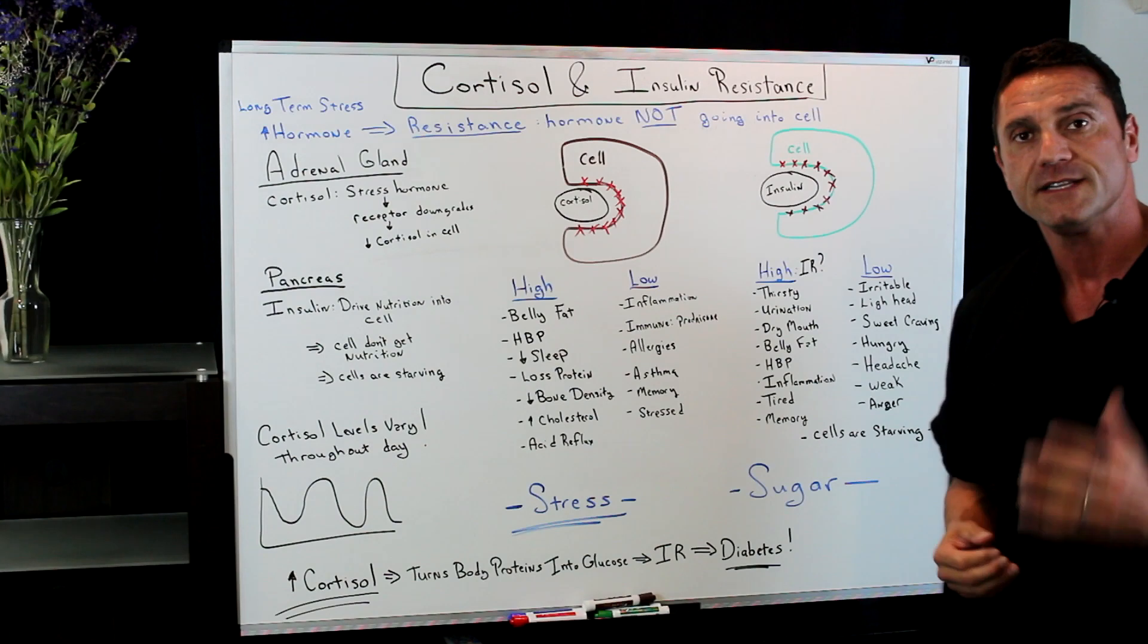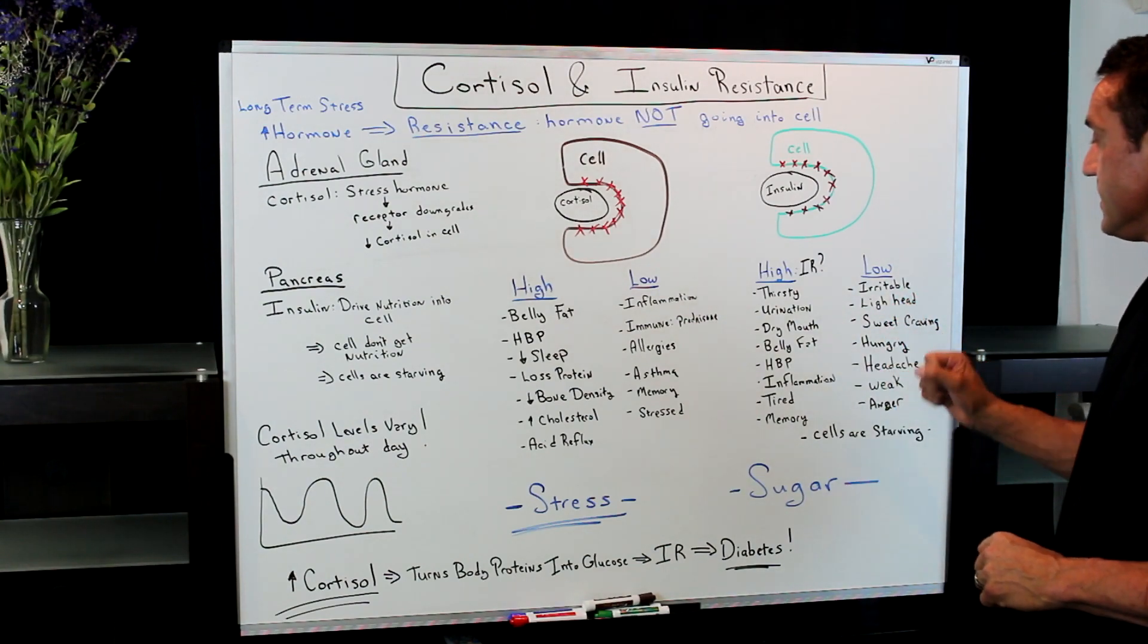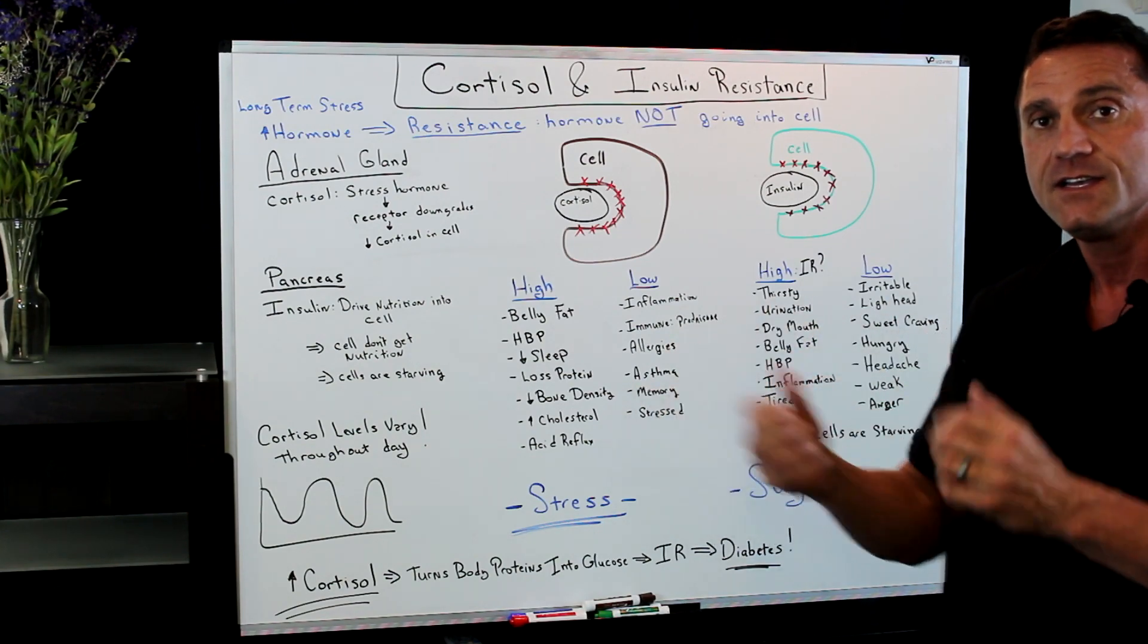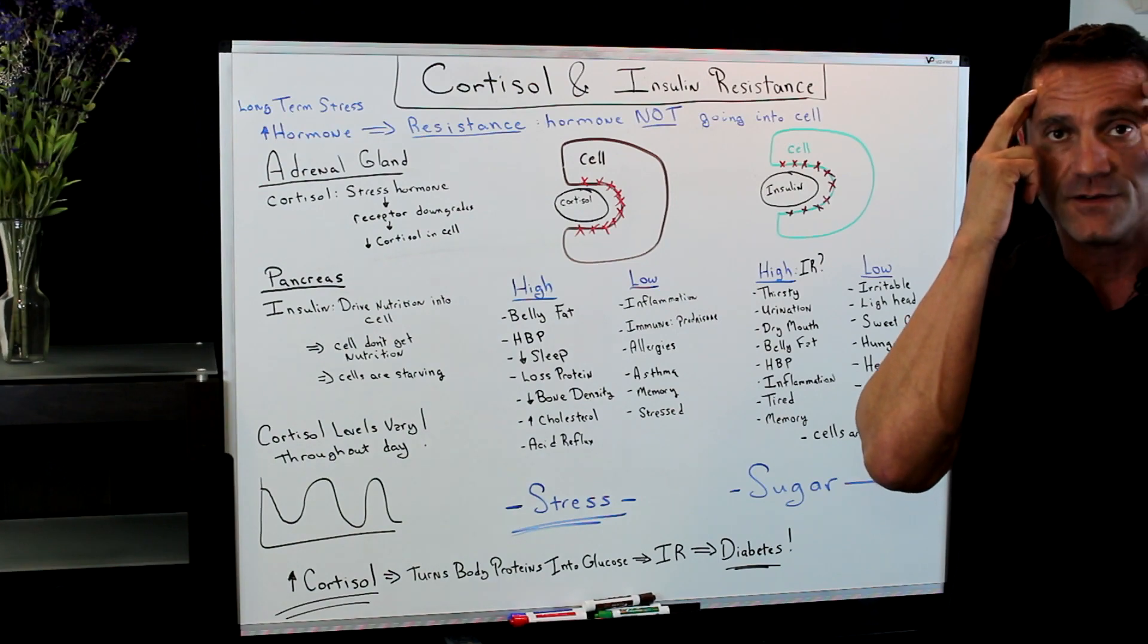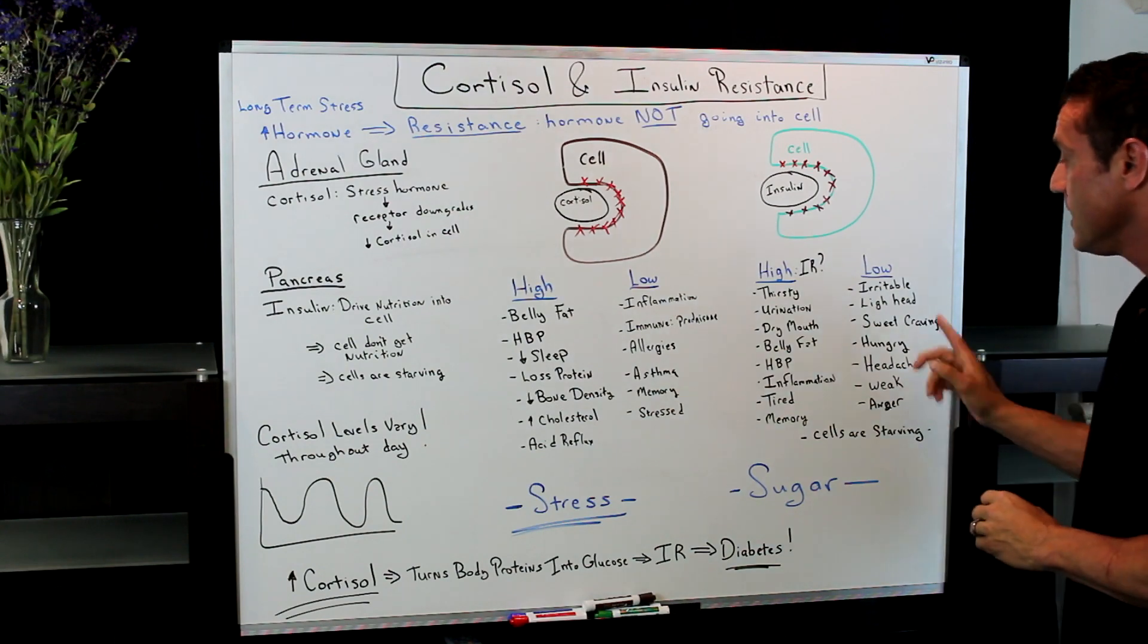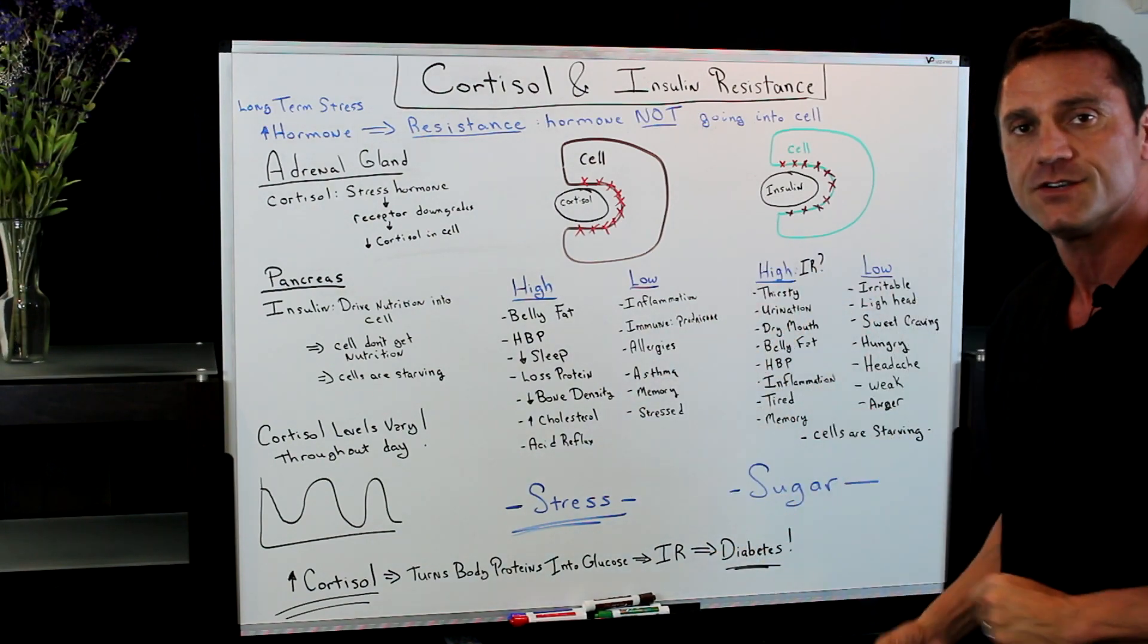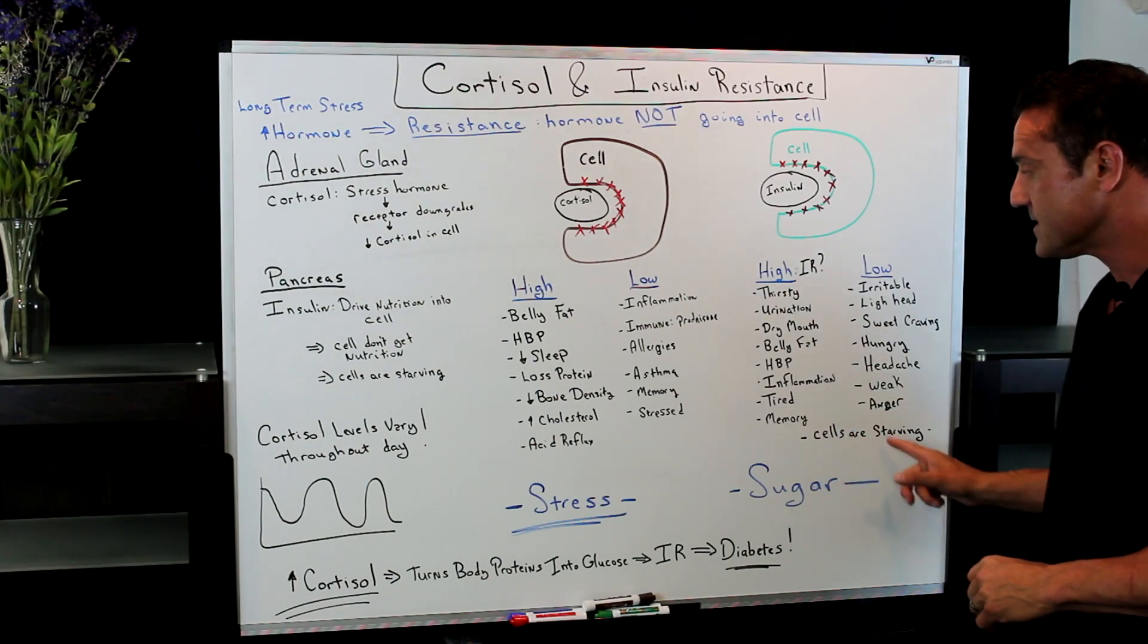You have low insulin going to the cell. This is where you get irritable, lightheaded, sweet craving. You're craving sweets all the time. Why? Because you have too much insulin and it's not getting into the cell, so you're craving food. Your brain needs sugar, glucose, first and foremost to function. If it's not getting that, this is where you crave sweets. You're hungry all the time, headache, weak. You're weak because your body is not getting the proper nutrition. And your anger, you're angry all the time. Basically the cells are starving.